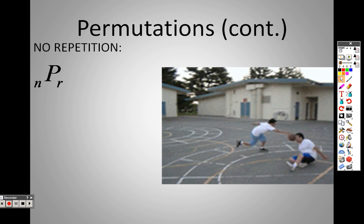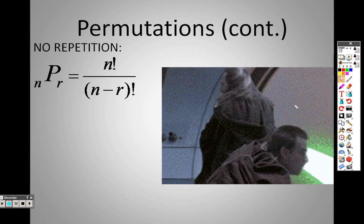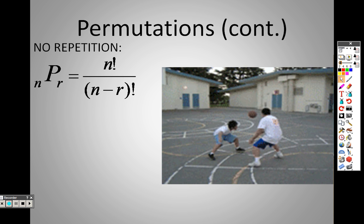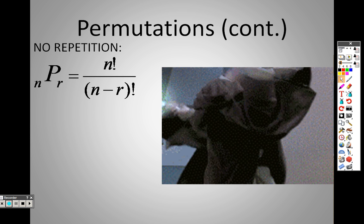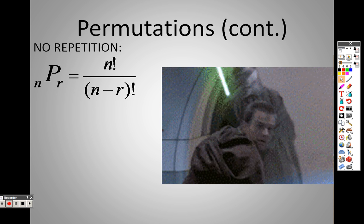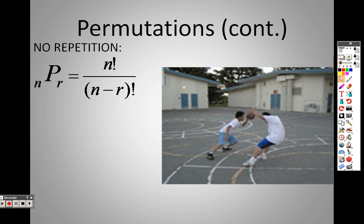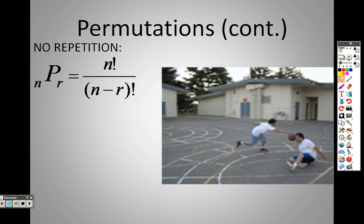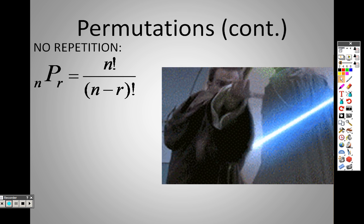Here's the one when things don't repeat: it is N factorial over N minus R factorial. For those of you who don't know what a factorial is, you take a number—for example, 7 factorial—and you multiply it consecutively down. So 7 factorial would be 7×6×5×4×3×2×1. That's what factorial means when you see that exclamation point.